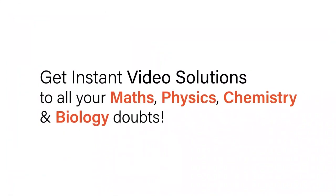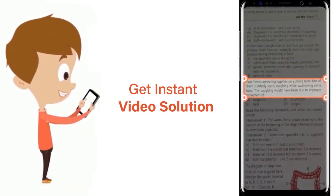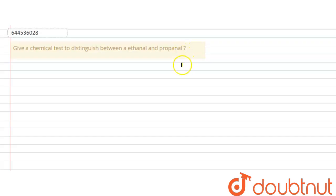With Doubtnet, get instant video solutions to all your maths, physics, chemistry, and biology doubts. Just click the image of the question, crop the question, and get instant video solution. Hello everyone, let's see this question. In this question it is given: give a chemical test to distinguish between ethanol and propanol.